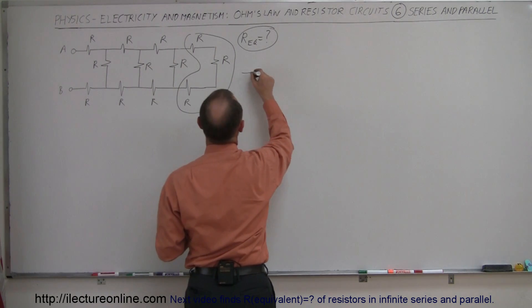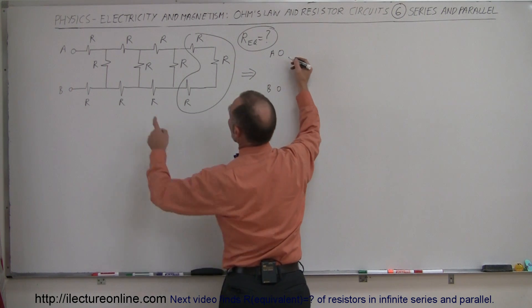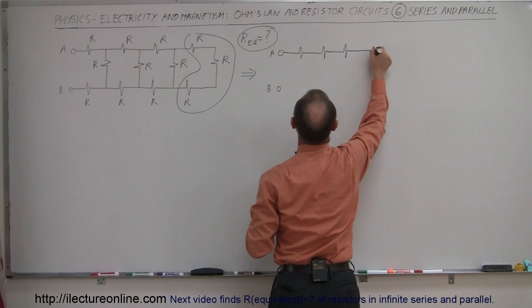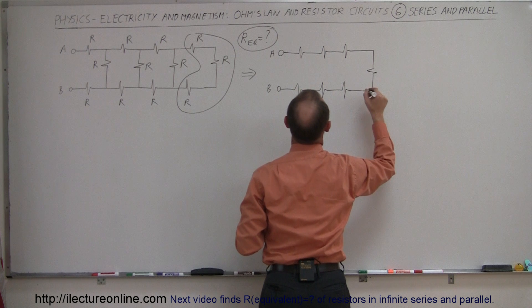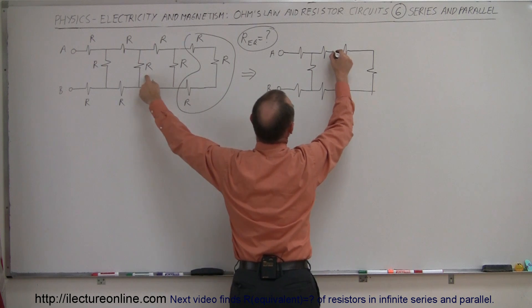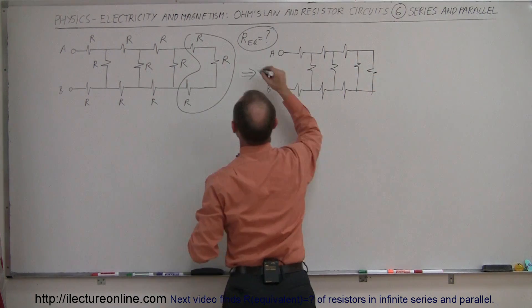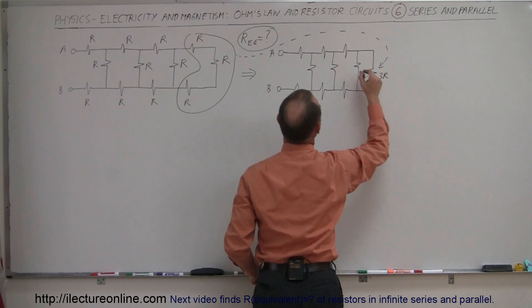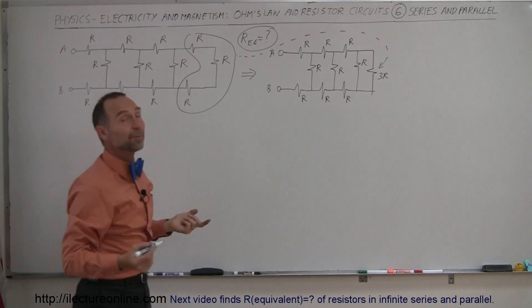So now we draw the equivalent circuit. We have our A and B terminal and we still have these three resistors. Those resistors right here became the equivalent resistance, and now it's going to be the 3R resistor. All the other ones are still R. And again remember they're in series, so simply add them together — we get 3R.